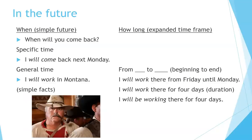In the future, we use when in the simple future. For example, when will you come back? It's talking about a specific time. I will come back next Monday. We can also use it with general time: I will work in Montana. With how long, we're going to expand the time frame — from when to when, beginning to end. I will work there from Friday until Monday. I will work there for four days — talking about duration. I will be working there for four days.